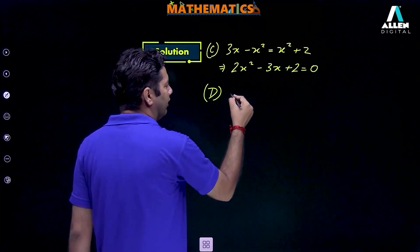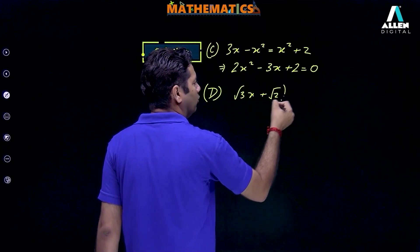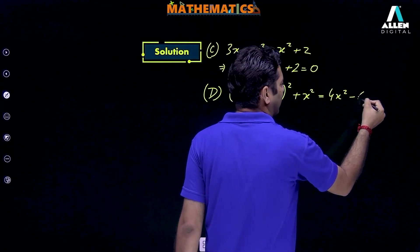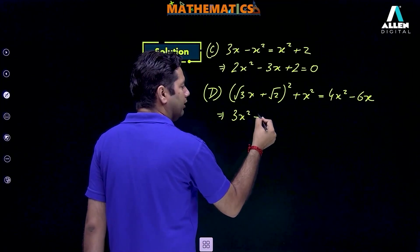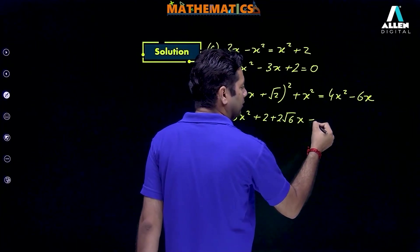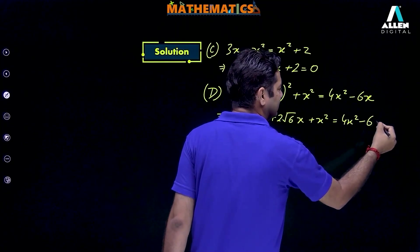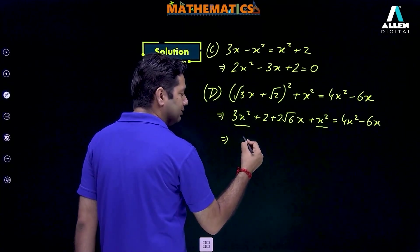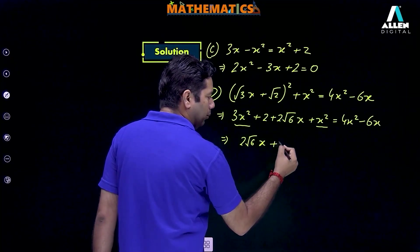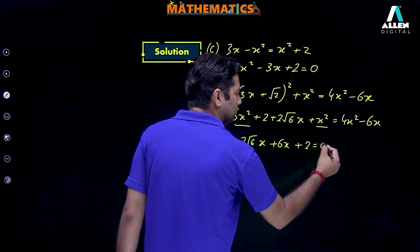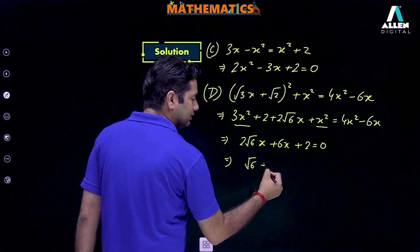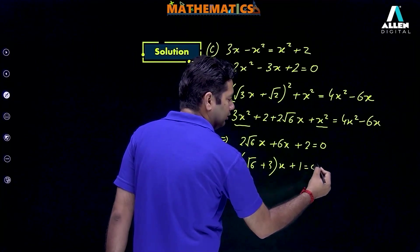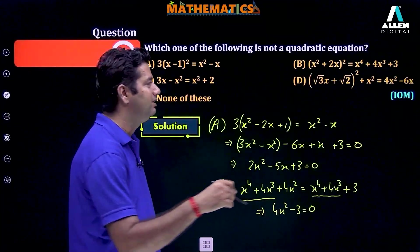For option D: (root 3x plus root 2) whole square equals 4x square minus 6x. Expanding, we get 3x square plus 2 plus 2 root 6 x plus x square equals 4x square minus 6x. Now 3x square plus x square equals 4x square, which is the same on the right-hand side, so these cancel out. The remaining part is 2 root 6 x plus 6x plus 2 equals 0. Taking 2 common and dividing, we get a linear equation, not a quadratic equation. It means option D is the correct one.